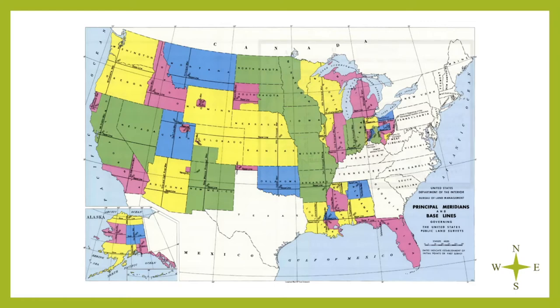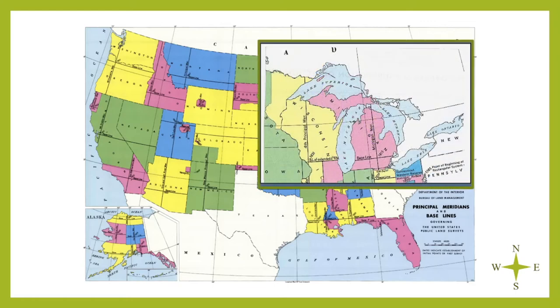All states using the PLSS have a reference point in which all townships are described in relation to. This reference point is the intersection of the principal meridian, running north-south, and the baseline, running east-west. Some states have multiple of these intersections.